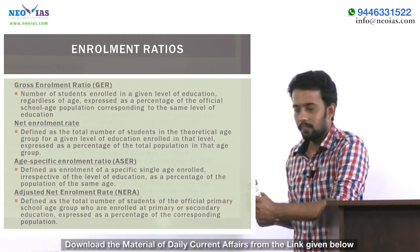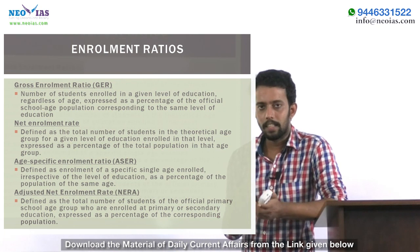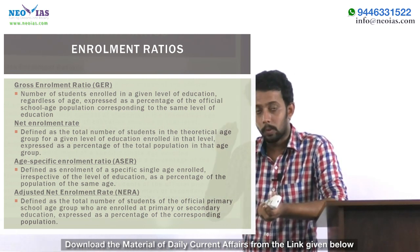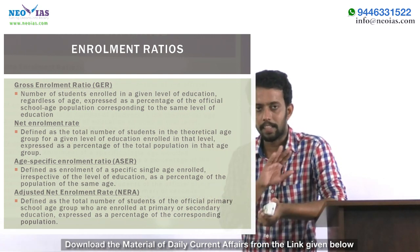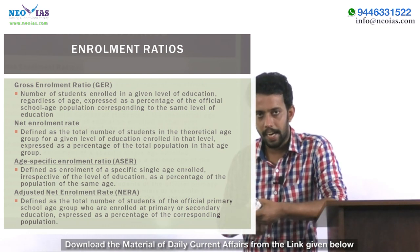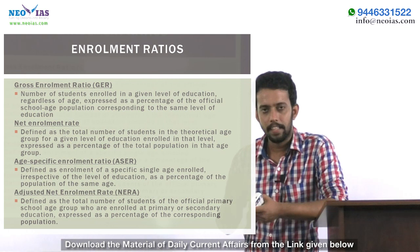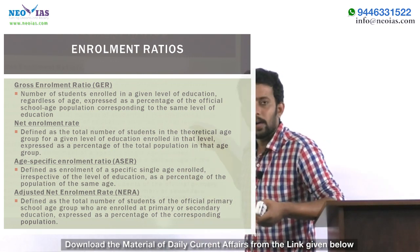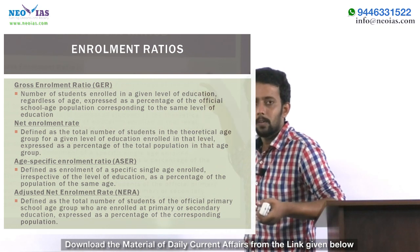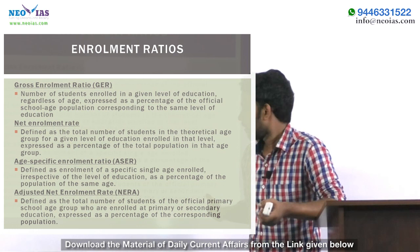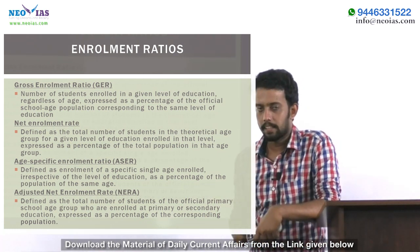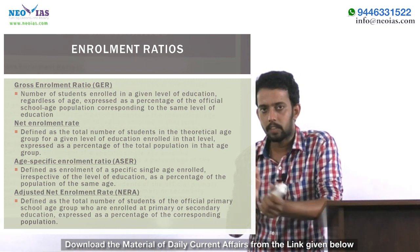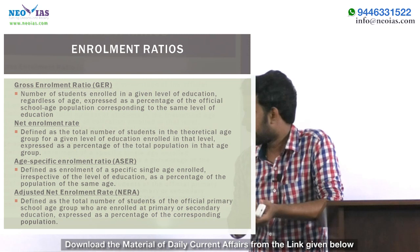To rectify this error, we use Age Specific Enrollment Ratio, or ASER. In ASER, we take a single specific age with no level requirement. We take all students aged six and count how many are enrolled in school regardless of grade — whether they're in Level 1, 2, or 3, all are taken into account. So in ASER there is no specific level of education. The drawback of ASER is that the resources cannot know which level each student is accommodated into.